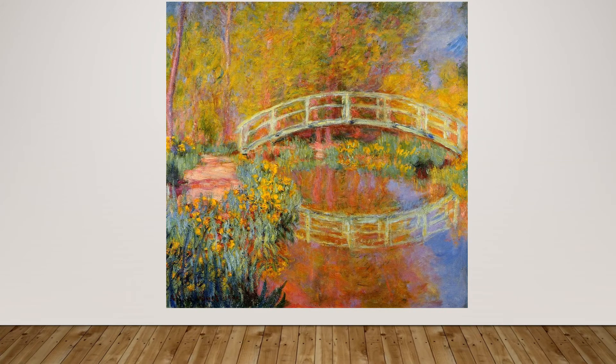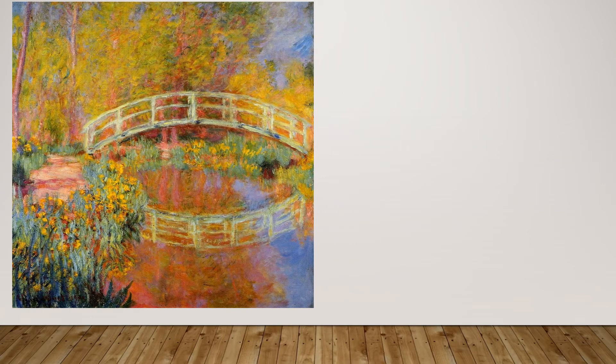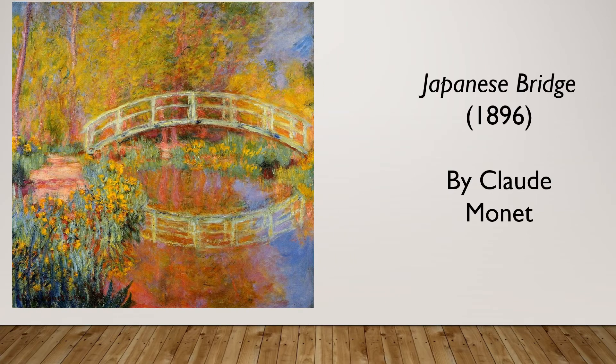Artist Monet painted this view of a bridge over a pond in his garden many times throughout his lifetime. Each time the painting is different as he notices the changes of the season. Here you can clearly see the reflection of the bridge and the colours of the trees in the water.